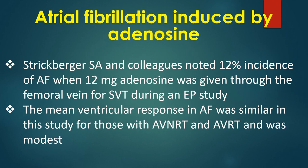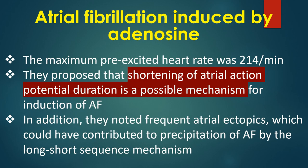Strickberger and colleagues noted a 12% incidence of AF when 12 mg adenosine was given through the femoral vein for SVT during an EP study. The mean ventricular response in AF was similar for those with AVNRT and AVRT and was modest. The maximum pre-excited heart rate was 214 per minute. They proposed that shortening of atrial action potential duration is a possible mechanism, and also noted frequent atrial ectopics contributing to AF precipitation by the long-short sequence mechanism.